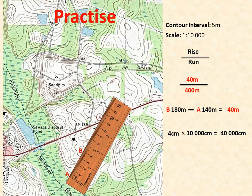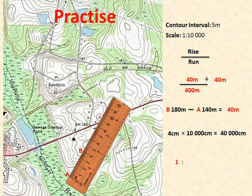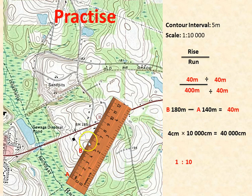Now we're ready to calculate. We divide 40 by itself, which gives us 1. Then we divide 400 by 40 as well, which gives us 10. So the gradient is 1 to 10 — for every 1 metre we go up, we're travelling along 10 metres.